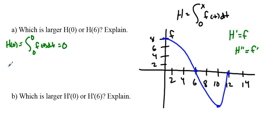In comparing this, we can find h of 6, which is going to be the integral from 0 to 6 of f of t dt. When you integrate, you're finding the area under the curve. This area from 0 to 6 is all positive, so that is going to be greater than 0. Therefore, h of 6 will be greater than h of 0.